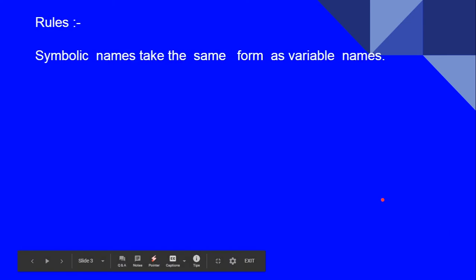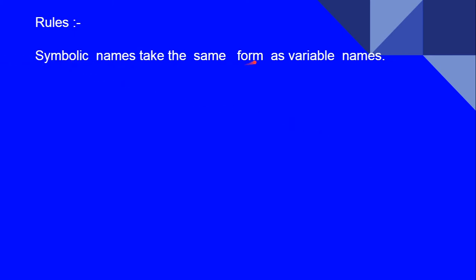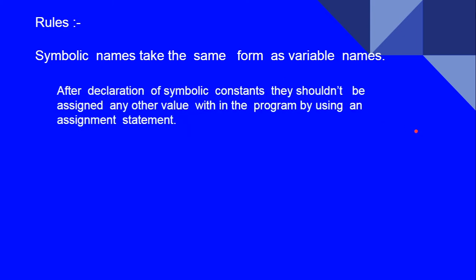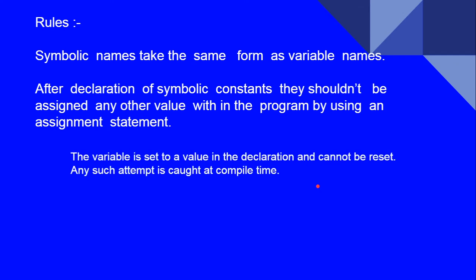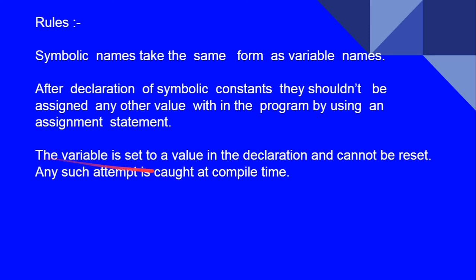There are some rules to follow when declaring symbolic constants. Symbolic constants take the same naming form as variable names. After declaring a symbolic constant, it should not be assigned any other value within the program using an assignment statement, because a value is already assigned. The variable is set to a value in the declaration and cannot be reset.